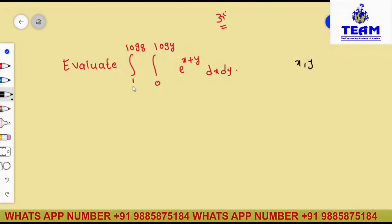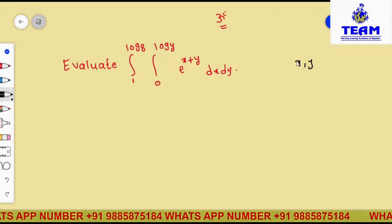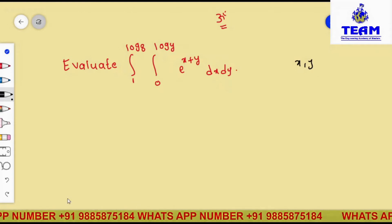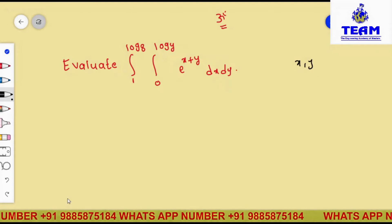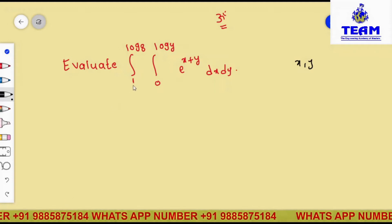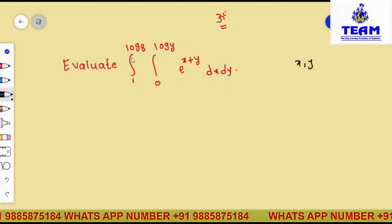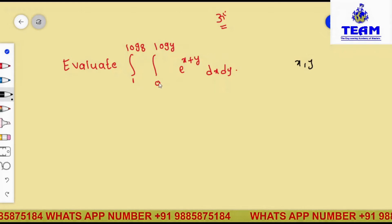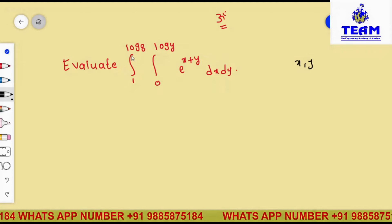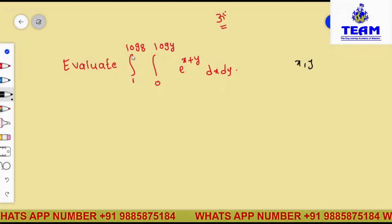We are doing double integrals in terms of x and y. First you have to identify the x limits and y limits in the given integration. One limit is given as 1 to log 8, another limit is given as 0 to log y. By observation you can say these limits — 1 to log 8 — are constant, nothing but independent limits.